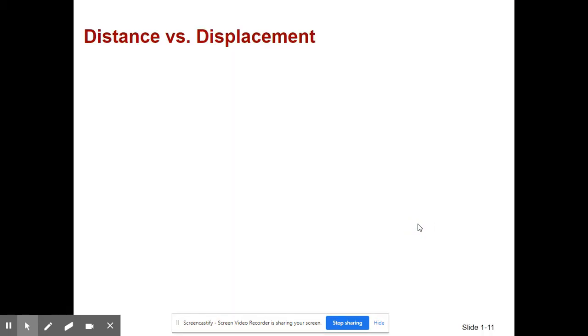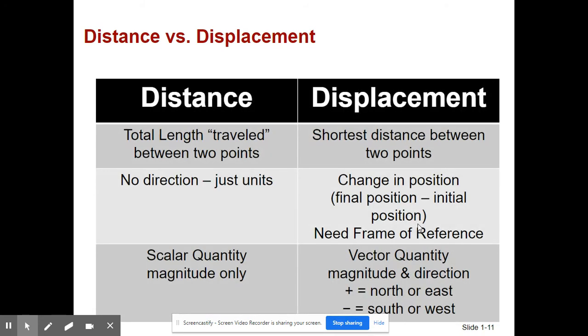So distance versus displacement. Distance is the total length traveled between two points. There's no direction, just units. Distance is a scalar quantity, it has magnitude only.